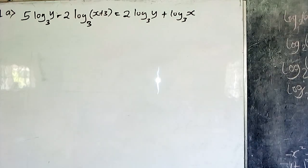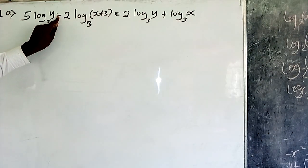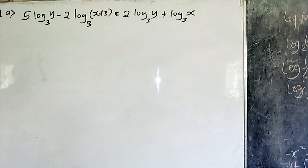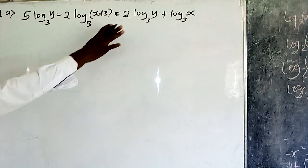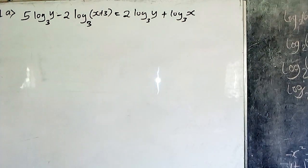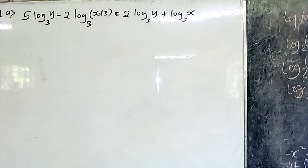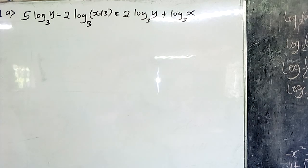Number one. Given that 5·log₃(y) minus 2·log₃(x+3) is equal to log₃(y²) plus log₃(x), express y in terms of x. When you are told to express y in terms of x, you are simply being asked to make y the subject of the formula.